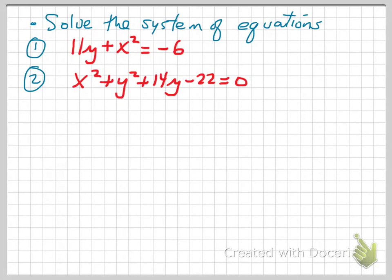First of all, what type of equations are they? What if I was to graph these equations, what would I be obtaining? From the first equation I know that it is a parabola. How do I know it's a parabola? Well, I know it's a parabola because it has an x squared term and a linear y, and not only do I know that it's a parabola,